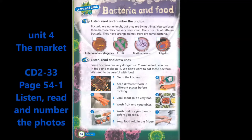Bacteria are not animals, but they are living things. You can't see them because they are very, very small. There are lots of different bacteria and they have strange names. Here are some bacteria: one, bacillus cereus; two, shigella; three, listeria monocytogenes; four, E. coli.